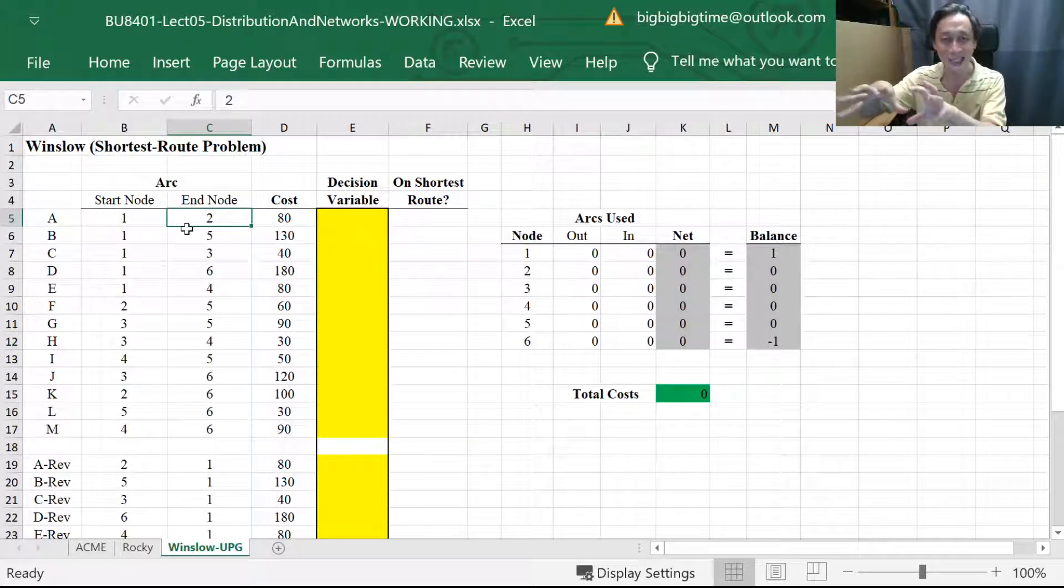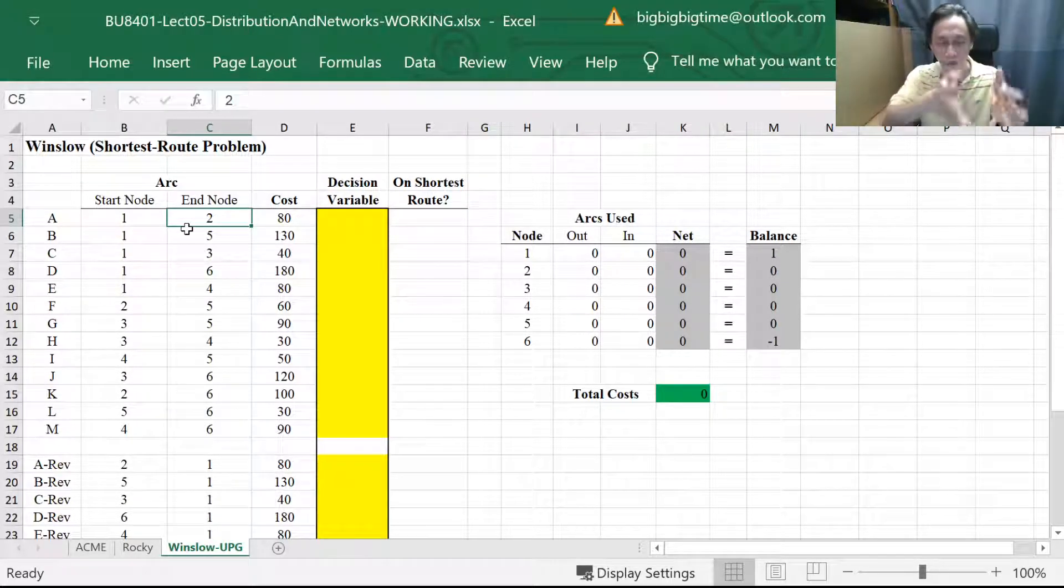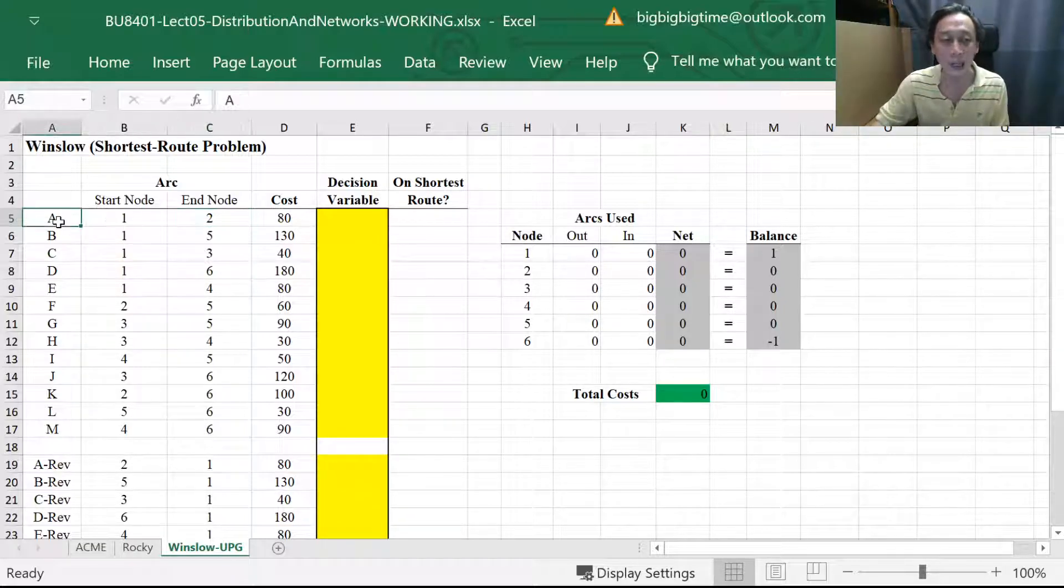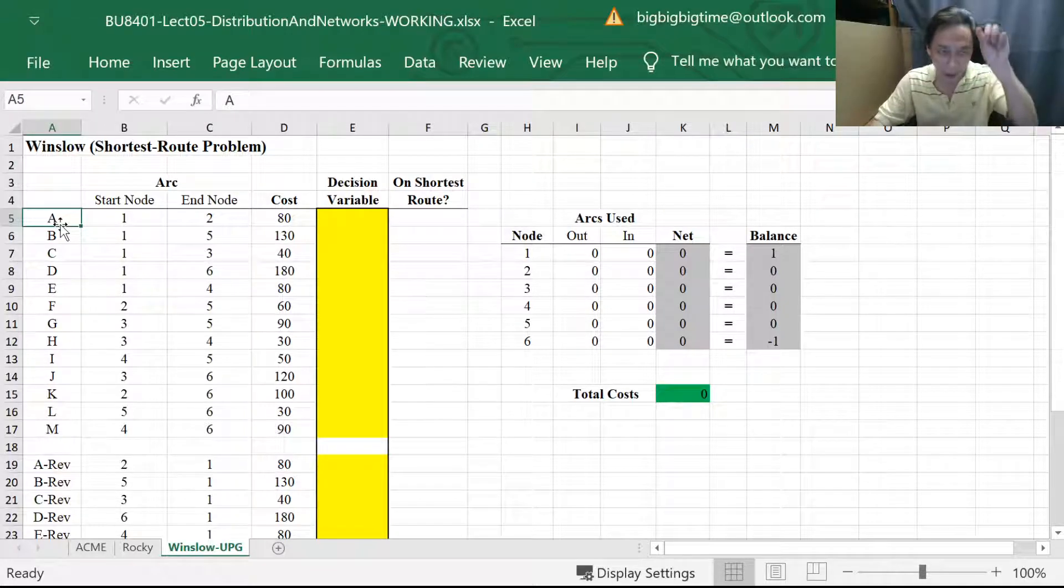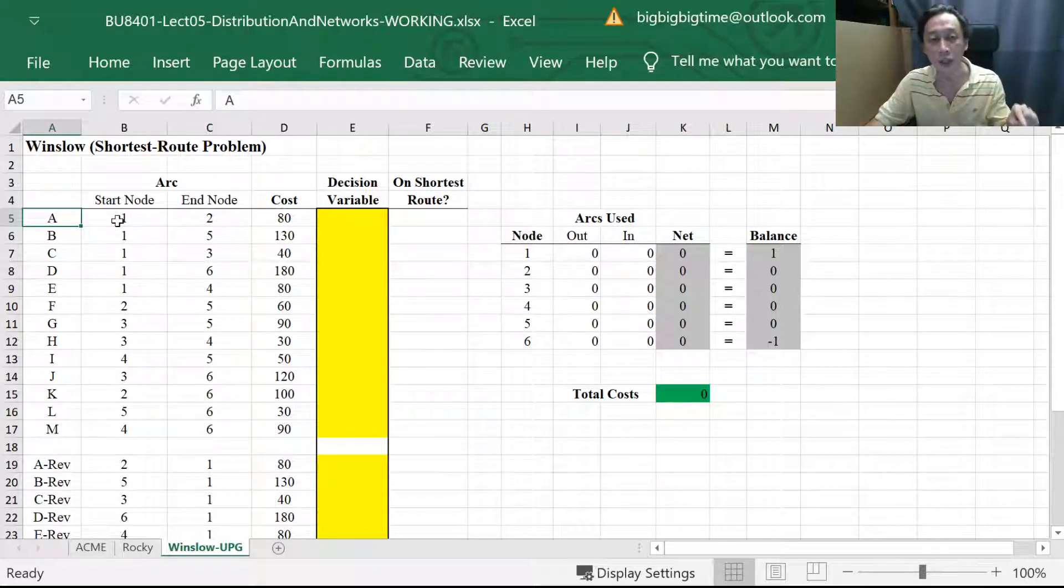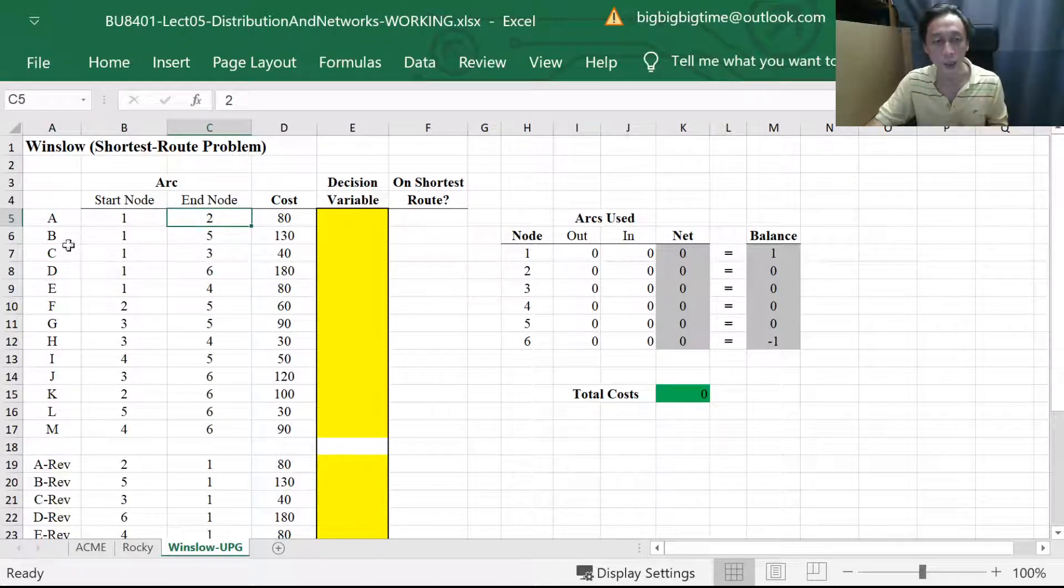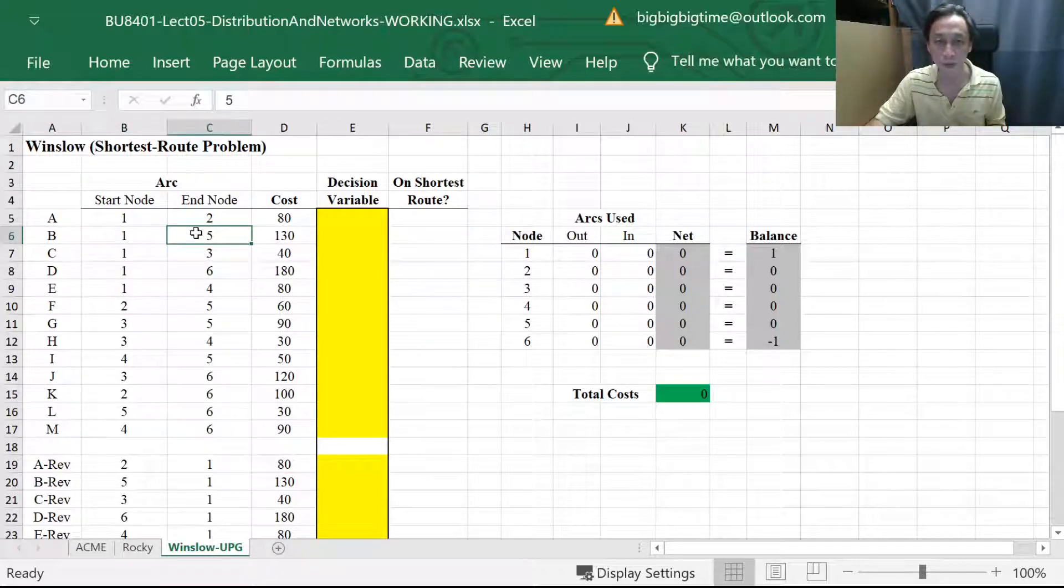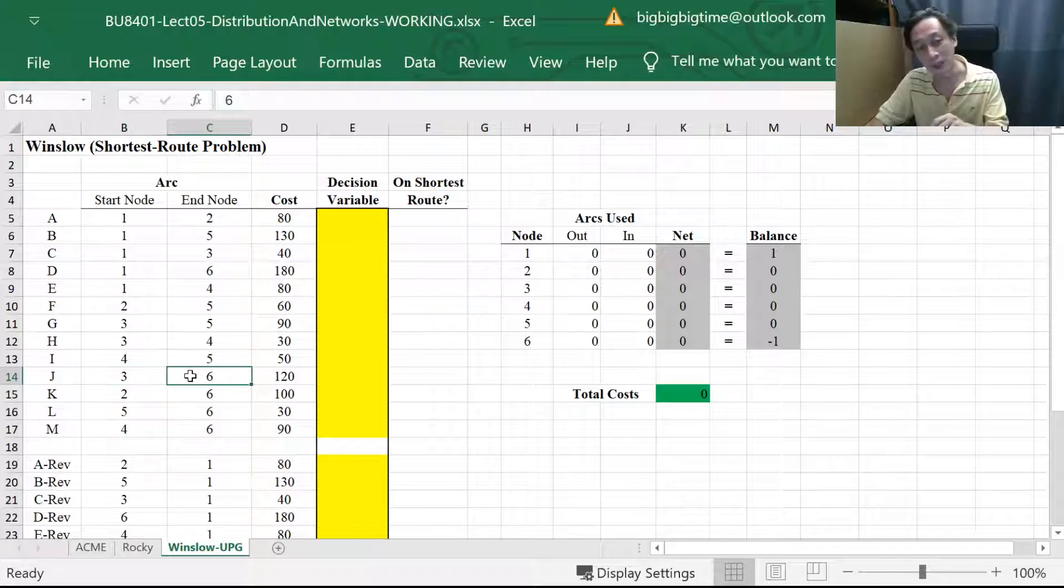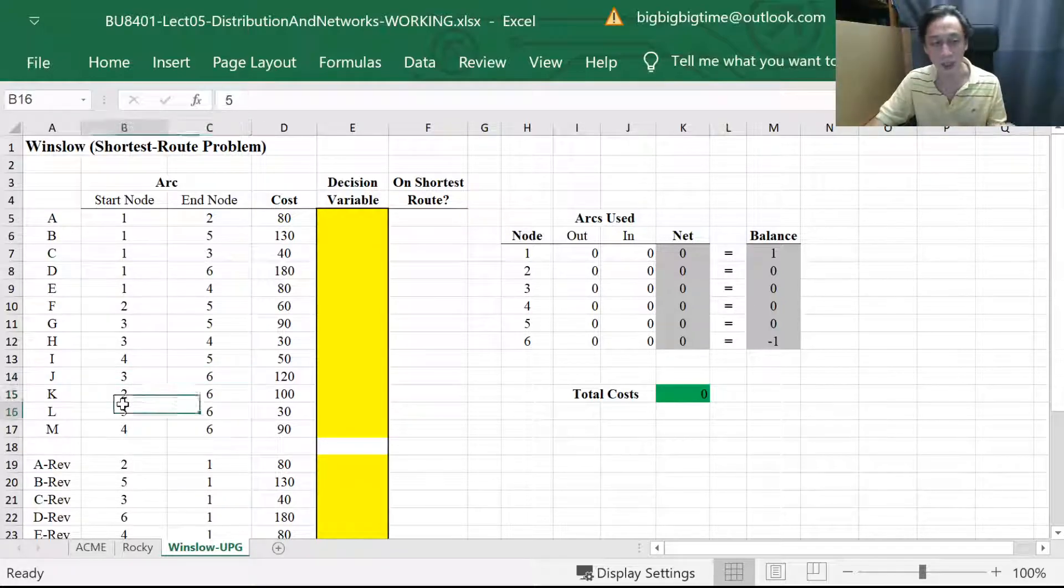That means we are trying to reflect the network diagram onto the columns in a very regular tabular format. Link A has a direction, it goes from 1 to 2. Link B goes from 1 to 5, and so on: 1 to 3, 1 to 6. How about those links that go into the destination? We have link J, which is going from node 3 into 6, node 2 into 6, and so on. That's easy.